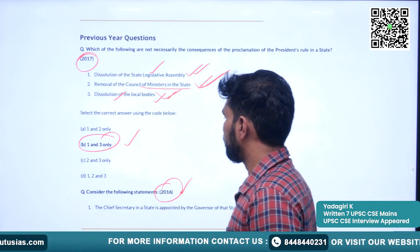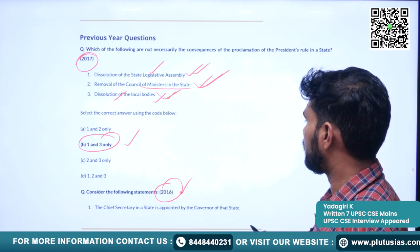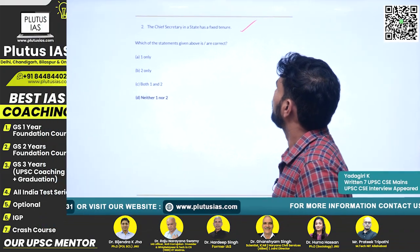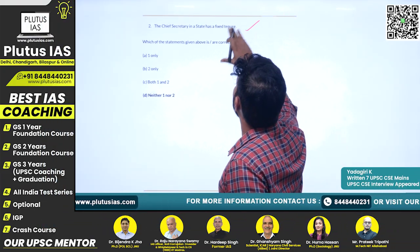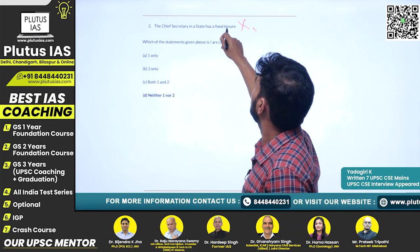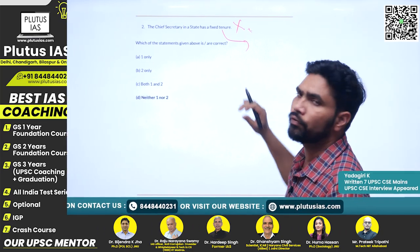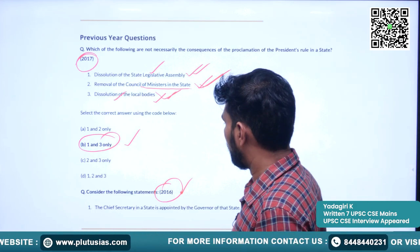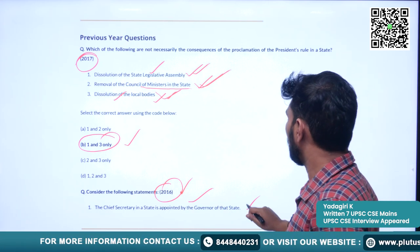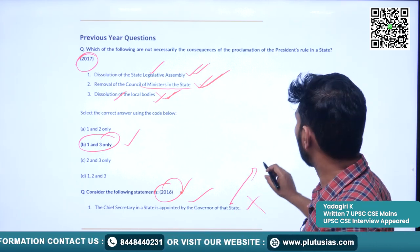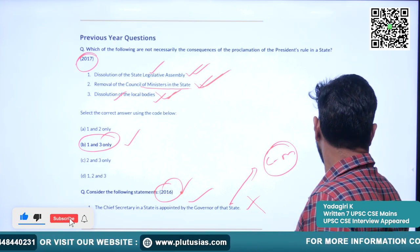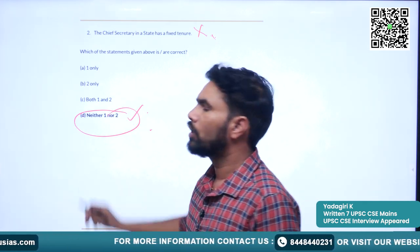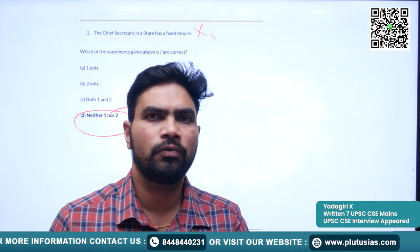Second question from 2016: Statement 1 — the chief secretary in a state is appointed by the governor of the state. Statement 2 — the chief secretary in a state has a fixed tenure. Both statements are incorrect. The chief secretary has no fixed tenure — the tenure system does not apply. And the chief secretary is appointed by the chief minister, not the governor. The answer is D — neither statement 1 nor statement 2 is correct. Thank you for joining the lecture, see you tomorrow.